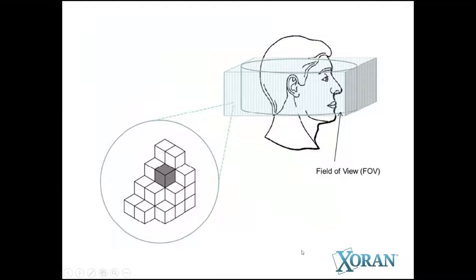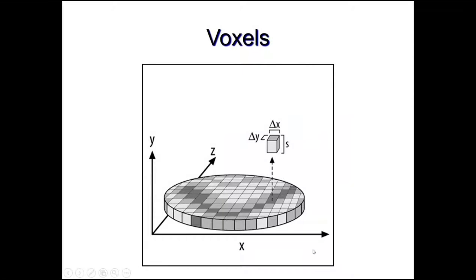Ultimately, we scan a portion of the anatomy which we call the field of view. The field of view is not to be confused with the size of the detector — the field of view is what is being imaged and what resulting volume of image we have on the screen. We also define what's called voxels, which is a three-dimensional pixel size — that is the smallest area of x-ray volume to which we give a gray value. Being three-dimensional, a voxel has three values.